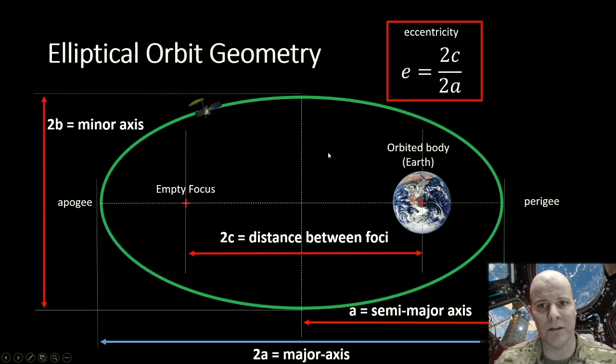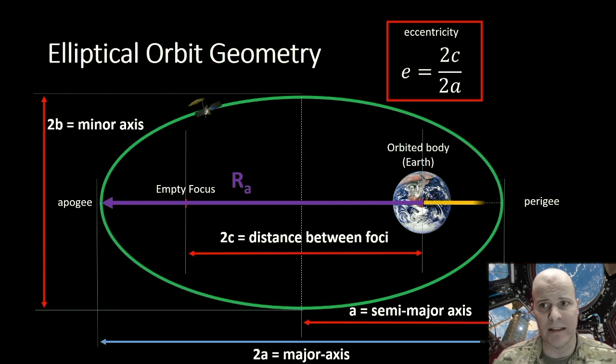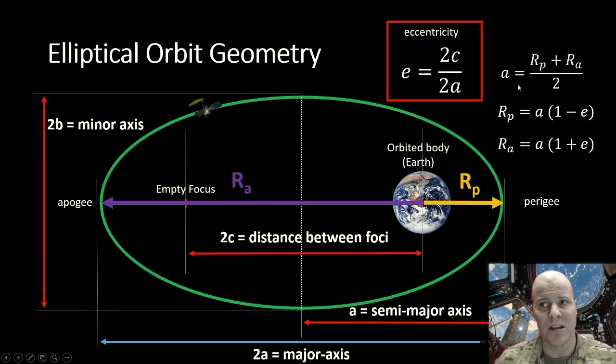We can also look at several other distances. The distance from the center of the Earth to apogee we are going to refer to as r subscript a. And the distance from the center of the Earth to perigee is r subscript p. We can relate those to our major axis using the following equations. So our semi-major axis is going to be equal to r_p plus r_a divided by 2, wherein the distance between r_p and r_a is simply our major axis.